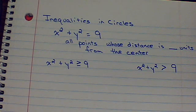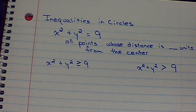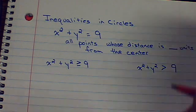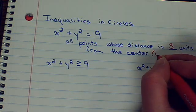Let's talk about a circle: x squared plus y squared equals 9. A circle is all the points that are a certain distance from the center, and they're equal distance from that center. So this is all the points whose distance is 3 units from the center, which in this case the center is 0, 0.